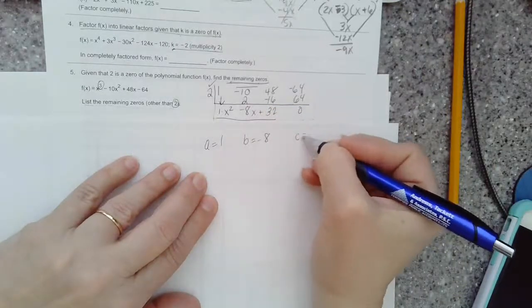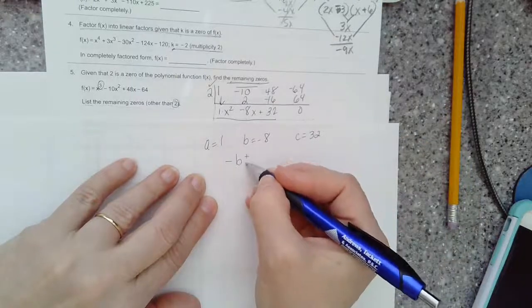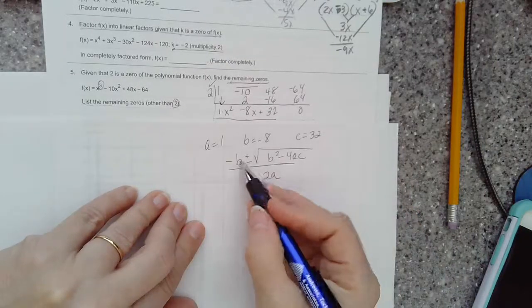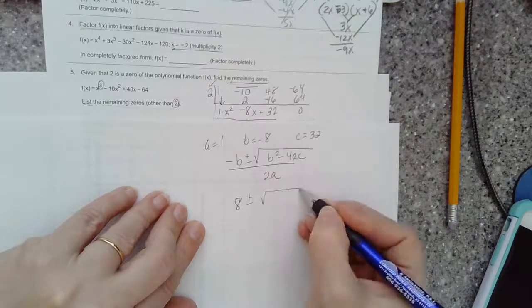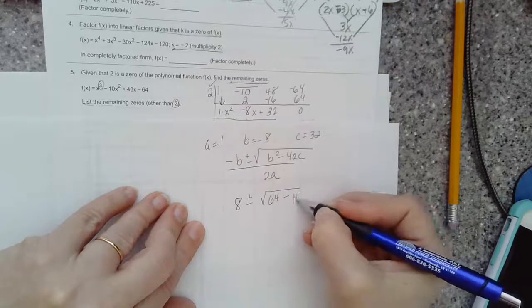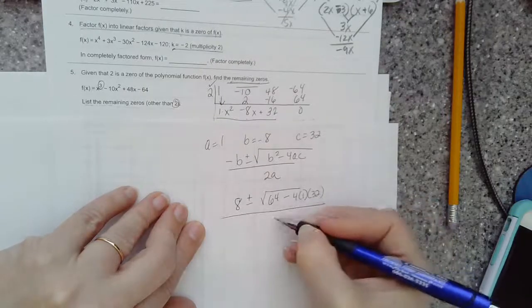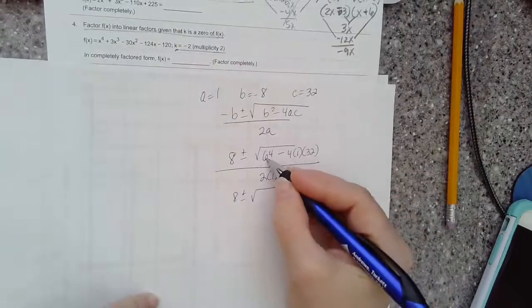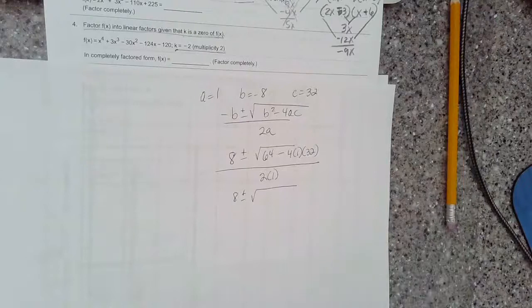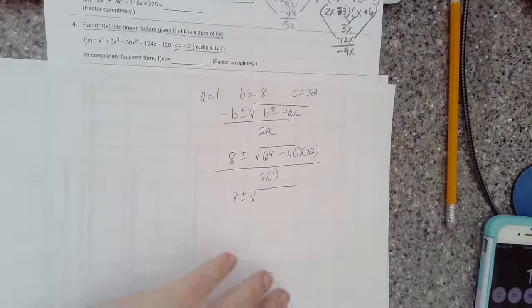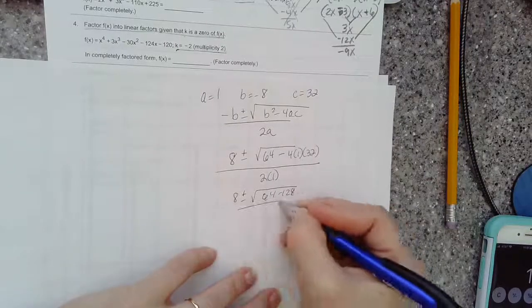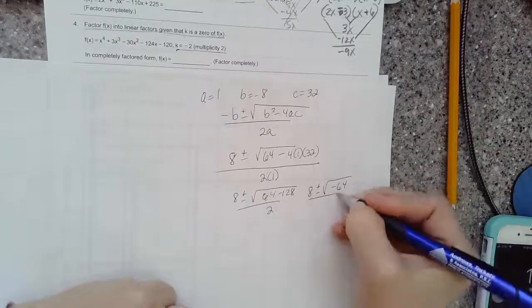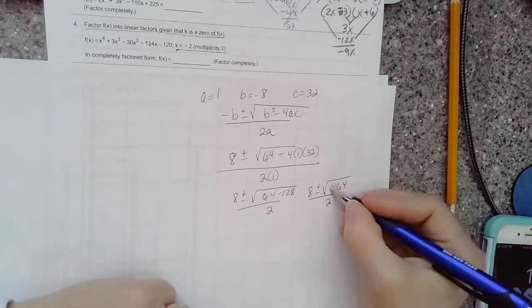Remember this formula we've used in our past to find these two solutions. The negative of b makes it positive 8. b squared will make that positive 64 minus 4 times a times c, all over 2 times the a value. Simplify under the radical. That will be 64 minus 128. I'm definitely going to have an imaginary now because I have a negative number under my radical.